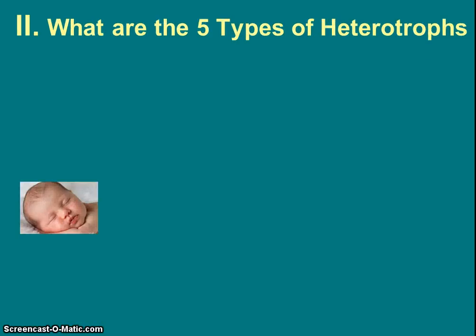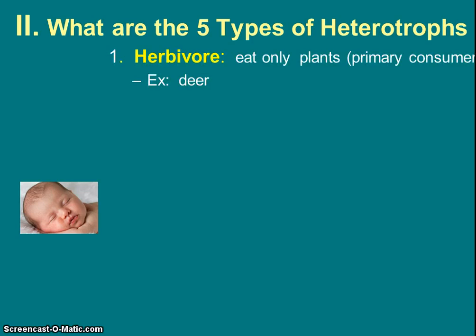We're going to have five different types of heterotrophs. The first type is an herbivore. An herbivore is something that only eats plants. We know that they are also called primary consumers, and a good example is a deer. Other types of mammals like koalas can also be herbivores.